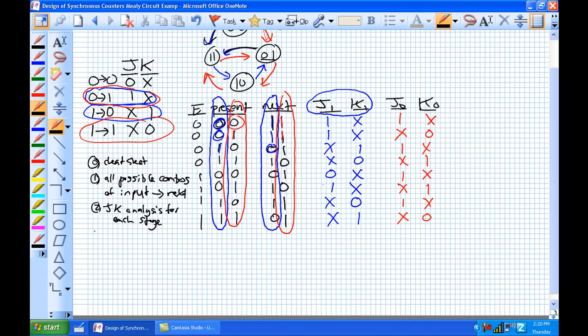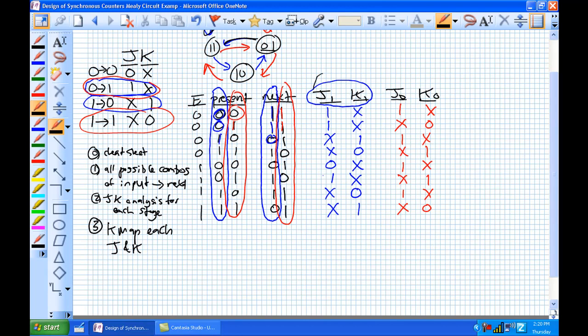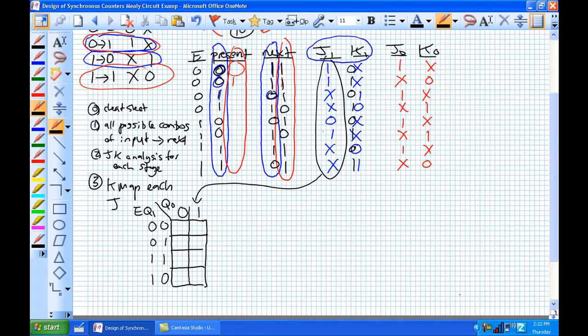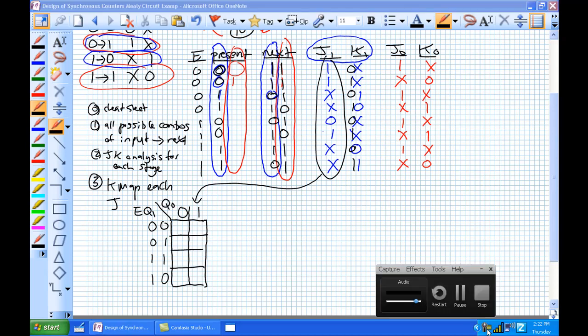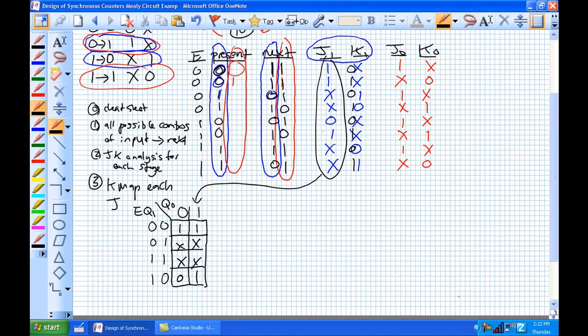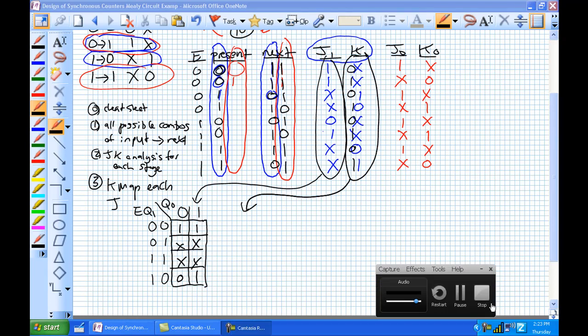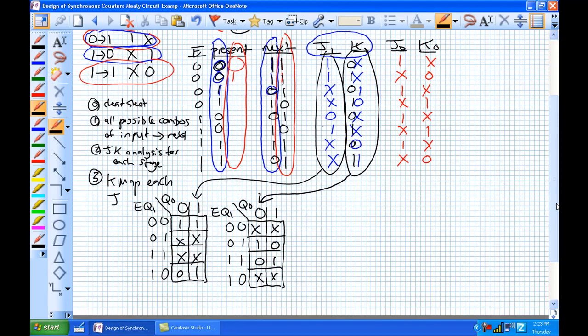So we're moving on to step 3. K-map each J and K. So each J and K. J1 goes in this K-map. And if you filled it out correctly, it should look something like this. And then the K1 should go in this K-map right here. And then J0 and K0 are going to each go in these K-maps.